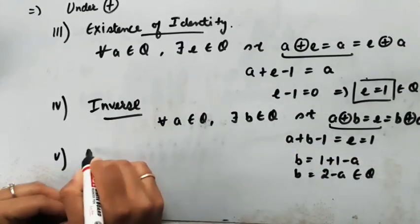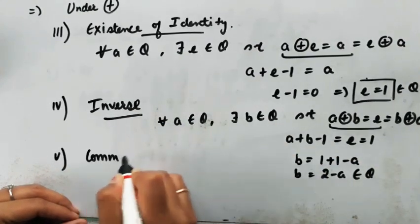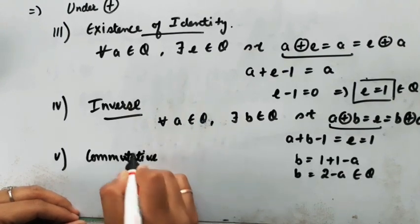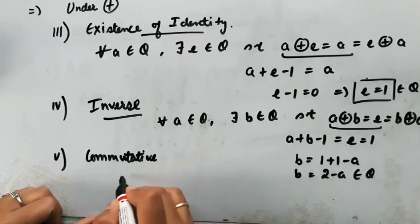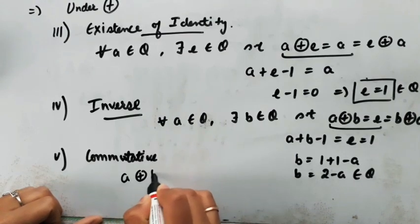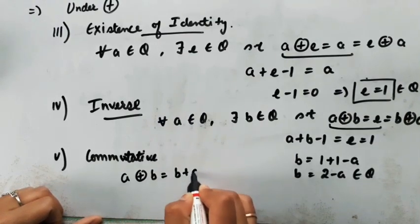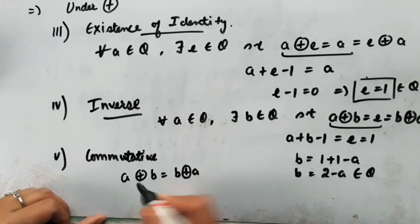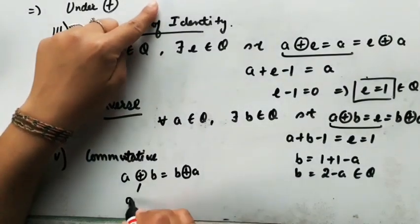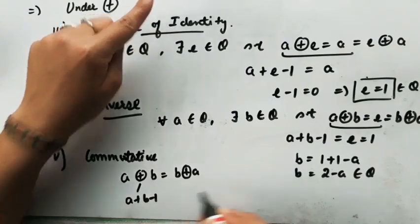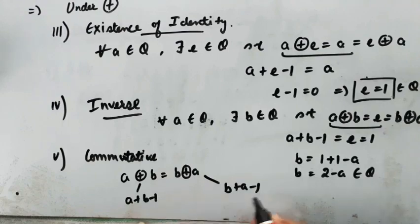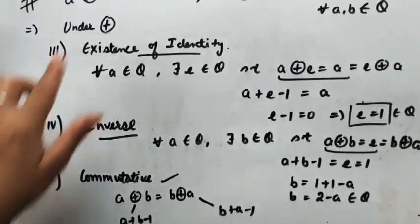The fifth property is the commutative property. We need to show a⊕b = b⊕a. Using the definition, a⊕b = a+b-1, and b⊕a = b+a-1, which are the same. So commutativity holds. Under addition, all five properties are satisfied.